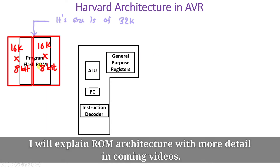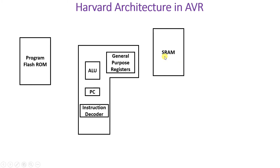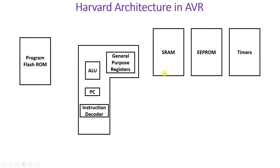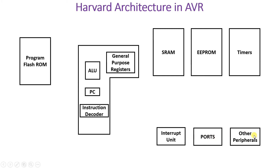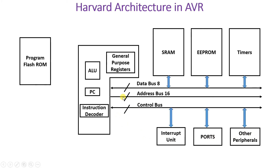The program memory is the 32k flash ROM. For data memory, we have SRAM and erasable programmable ROM. There are also timers, an interrupt unit for interfacing peripherals, and ports connected with the CPU. The data memory uses an 8-bit data bus and a 16-bit address bus, with a control bus to control all peripherals.